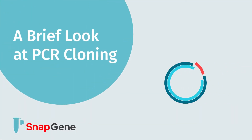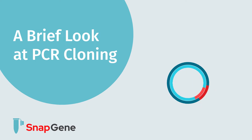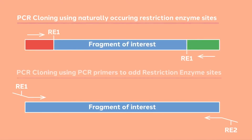In this video, we are going to review the basics of PCR cloning. A very direct way to clone a PCR product is to take advantage of restriction sites that are native to your fragment of interest. This is of course limited to the restriction enzyme sites that are already in or adjacent to your target gene.